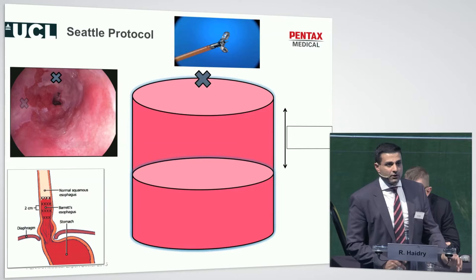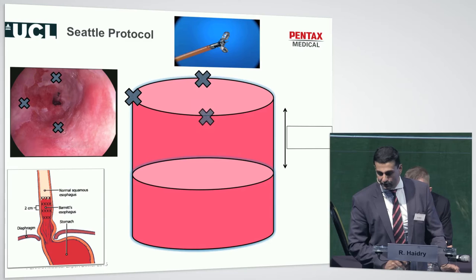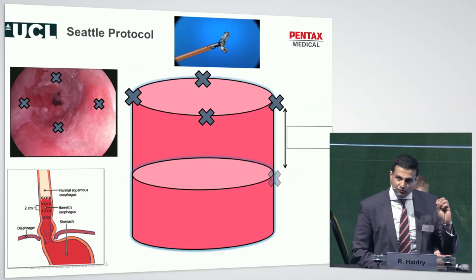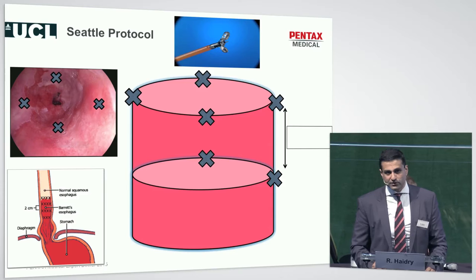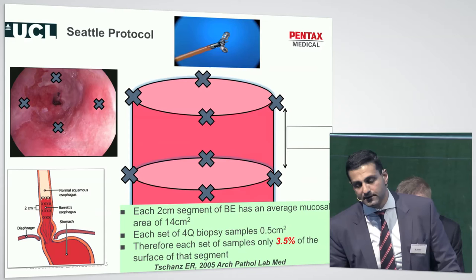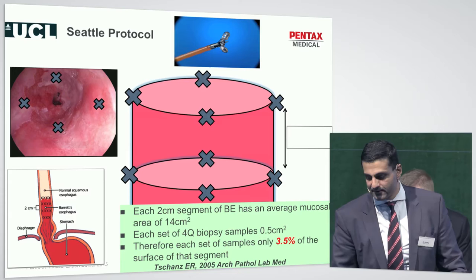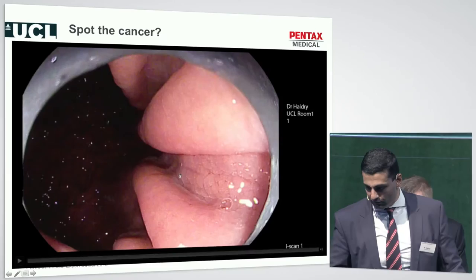The Seattle Protocol — still the gold standard by most European and American societies for sampling patients with Barrett's esophagus — relies on random four-quadrant sampling of the tubular esophagus every one to two centimeters. We know from very good data that even in expert hands, we only sample 3.5% of an entire segment of Barrett's esophagus, so we will miss neoplasia.